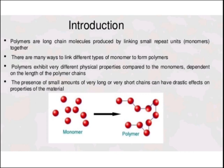But when, by using the poly addition method, we convert ethylene to polyethylene, it becomes a solid. Gaseous components and solid components have different physical properties, and these properties change according to chain length. The presence of small amounts of very long or very short chains can have drastic effects on the physical properties of the polymer.